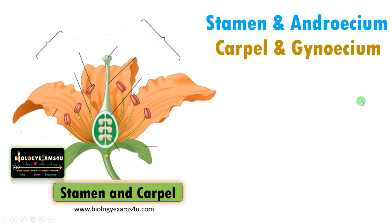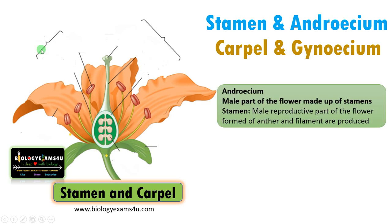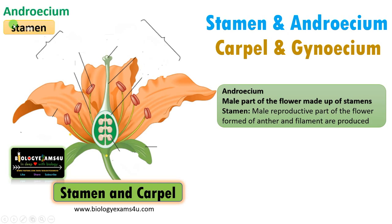Next, stamen and androecium; carpel and gynoecium. Androecium is the third whorl of the flower. It is the male part of the flower, made up of stamens. The basic unit of androecium is called the stamen.